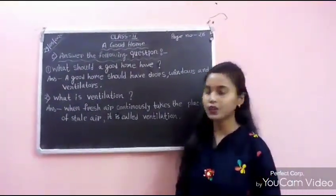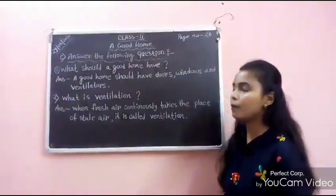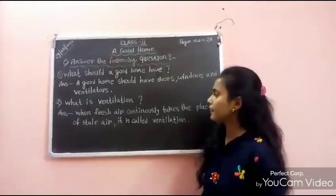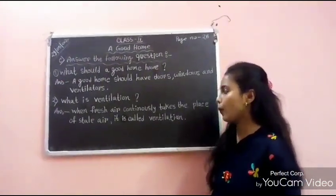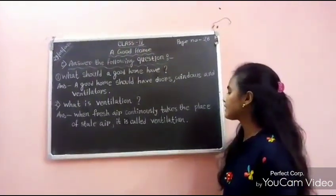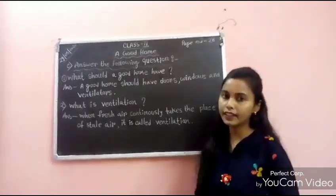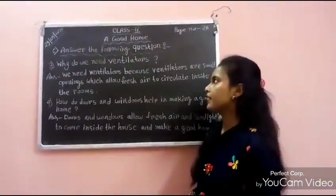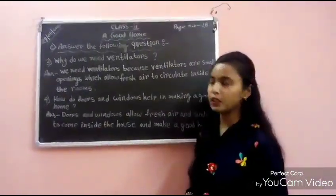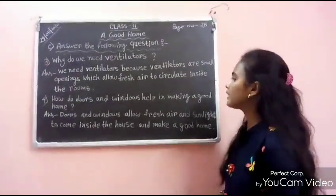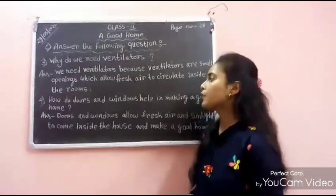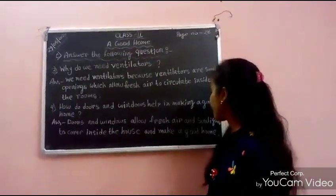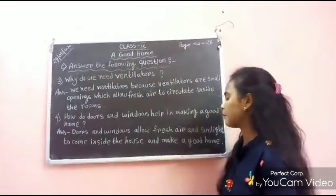Answer the following questions. Number 1: What should a good home have? A good home should have doors, windows, and ventilators. Number 2: What is ventilation? When fresh air continuously takes the place of stale air, it is called ventilation. Number 3: Why do we need ventilators? We need ventilators because they are small openings which allow fresh air to circulate inside the rooms. Number 4: How do doors and windows help in making a good home? Doors and windows allow fresh air and sunlight to come inside the house and make a good home.